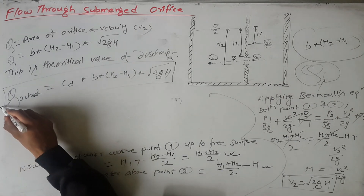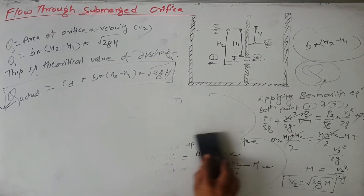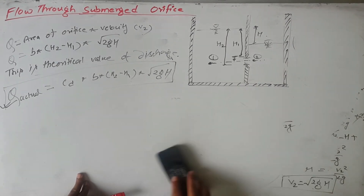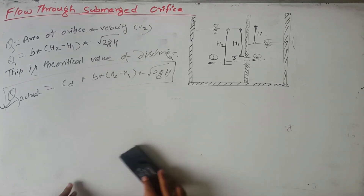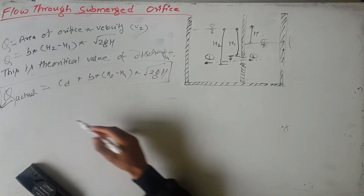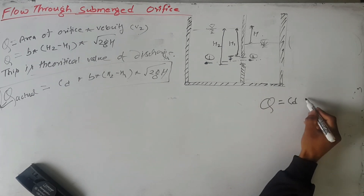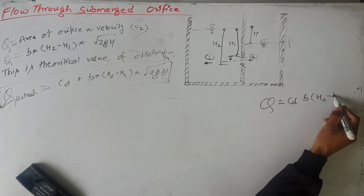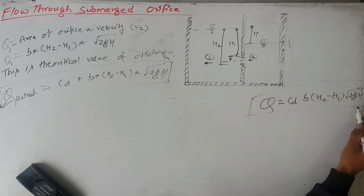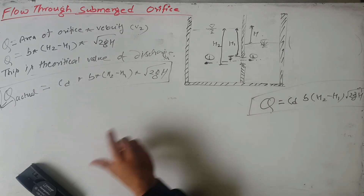We note this value to use later for the partially submerged orifice. So Q_actual = C_D × B × (h2 − h1) × √(2gh). We will use this formula while deriving the relation for flow through the partially submerged orifice.